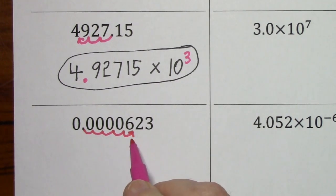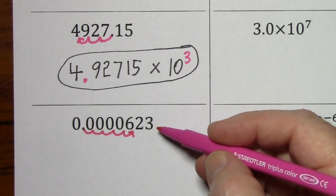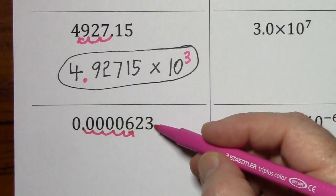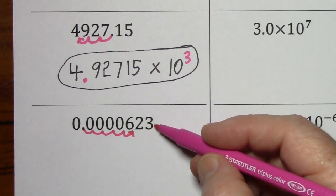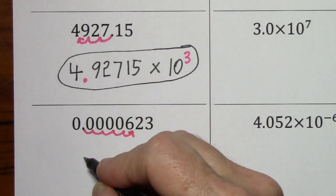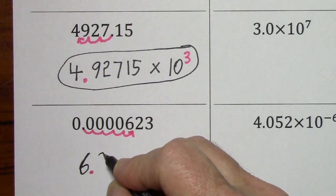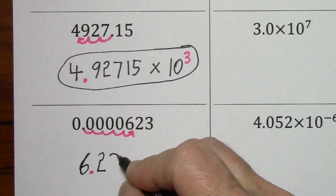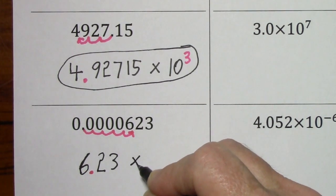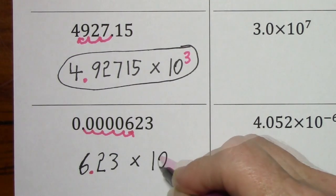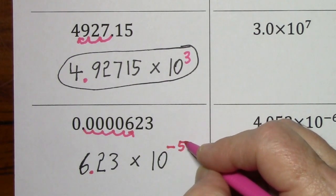But notice I'm going in the other direction. This is a very small number to start with. When we represent this in scientific notation, you get 6.23 times 10 to the negative five.